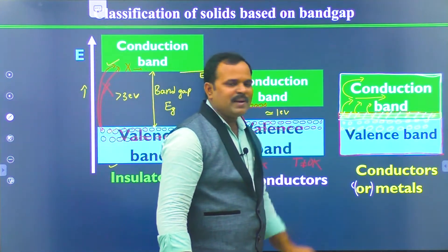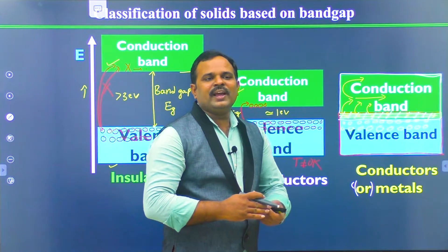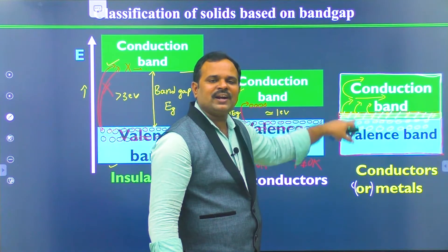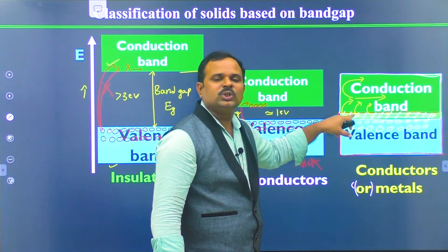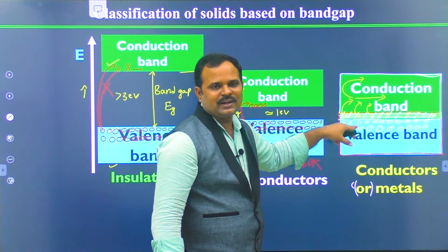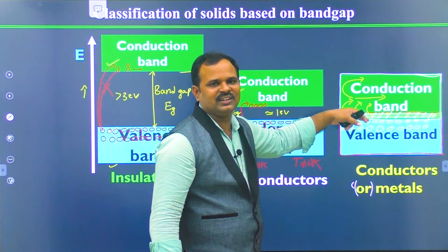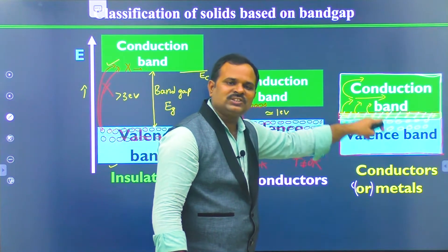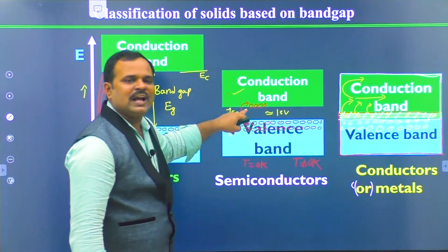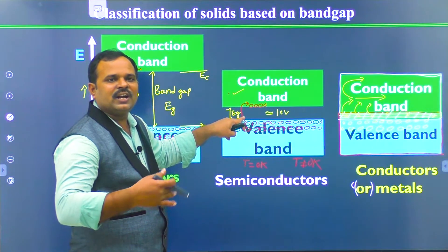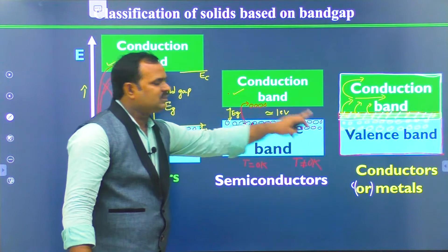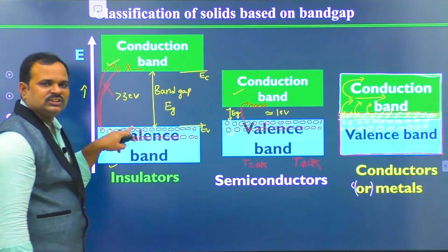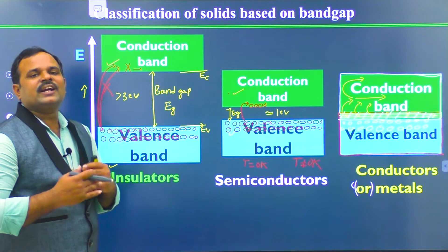Whereas in the case of metals, we do not need to apply any temperature, since the valence band and conduction band are overlapping each other. There is a large enough number of electrons in the valence band which can excite into the conduction band automatically and participate in conduction. That is the reason why metals have larger conductivities, semiconductors have moderate conductivities lying between metals and insulators, and in the case of insulators we cannot excite electrons across the bandgap.